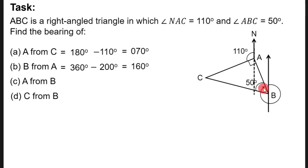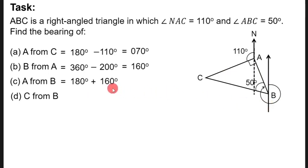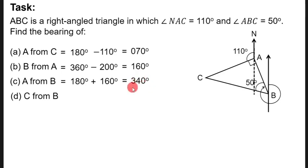The alternate angle equals 160 degrees. So the total bearing of A from B equals 180 plus 160, which gives us 340 degrees. So you move clockwise 340 degrees from north at B to reach A.